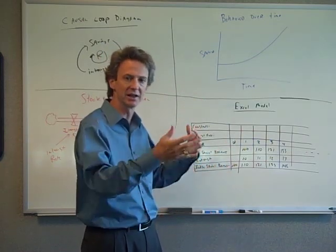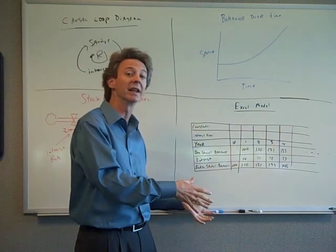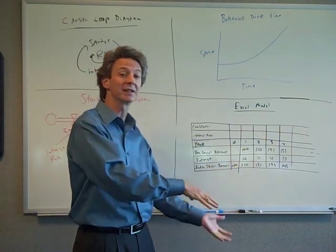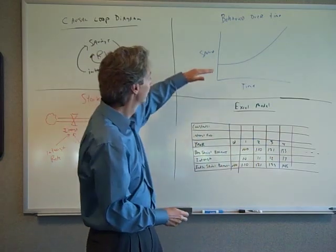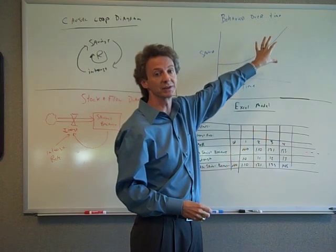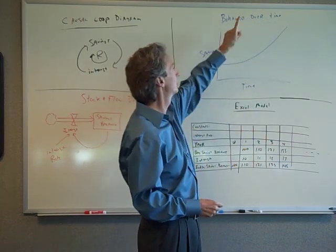that makes it $110 balance. Now you get $11 in interest next year, makes it $121 balance. Now you get $12 in interest. So it's basically growing more and more over time which is the shape of a virtuous cycle. So that's tool number two.